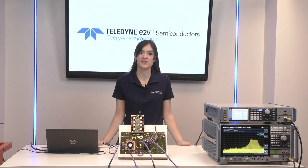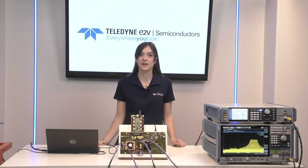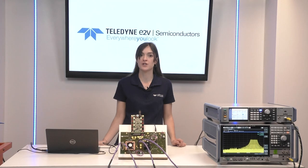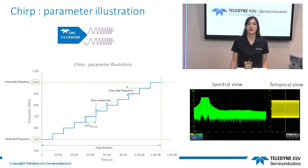One of the DDS functionalities is the chirp signal generation. The DDS allows the DAC to generate a continuous waveform without data samples sent from an FPGA. The chirp signal is a sweep of the sinusoidal pattern generated by the DDS. SPI sequences are used to write configuration registers and to start signal generation. Chirp signal parameters are programmable and are illustrated in this chart.